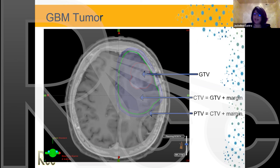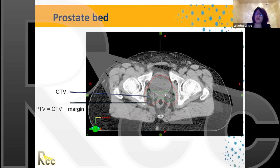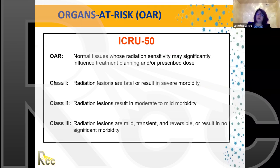Visually, we can now see the GTV, CTV, and PTV all together — for example on a prostate bed case where the CTV covers the region of the seminal vesicles and prostate fossa, and similarly for a lung/mediastinum case showing the same contouring hierarchy applied.